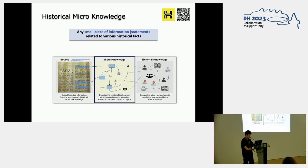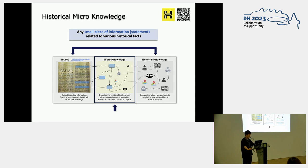In terms of historical data creation, the connection between the source sphere on the left, and the external knowledge sphere on the right, has been much realized by marking up text with TEI or other standards. On the other hand, however, attempts to represent the semantic contents of the text itself as standardized data are still relatively rare. Micro-knowledge deals with any small pieces of information related to historical facts and takes each of them as a basic resource of RDF linked data. As an information unit is quite small and each is based on a specific source description, the complex semantics contained there can be better preserved and various types of information can be represented in a simple and common way.